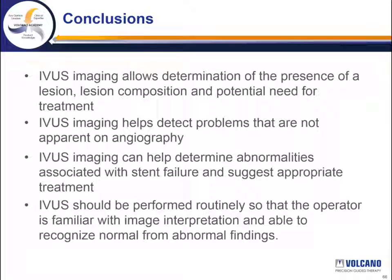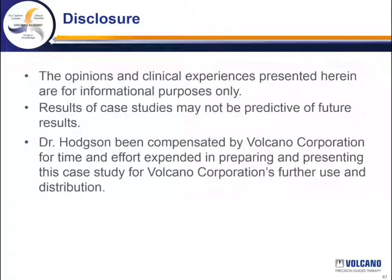In conclusion, IVUS imaging allows the determination of the presence of a lesion, the lesion composition — particularly calcium — and the potential need for treatment. IVUS detects problems that are not apparent on the angiogram, and there are certain situations where we always should image because the angiogram is just unreliable. IVUS imaging can certainly determine the abnormalities associated with stent failure and suggest appropriate treatment. Finally, it's my view that IVUS should be performed routinely so that the operator is familiar with image interpretation and comfortable recognizing normal from abnormal findings — that way when they have an unusual circumstance, they'll be able to quickly sort out what the issue is.